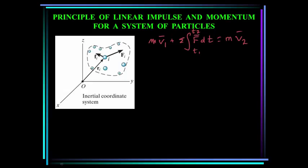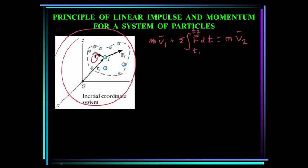Now we're going to extend this to a system of particles. The little f sub i's are internal forces acting between the particles as they collide or interact with each other. The internal forces between particles always occur in pairs with equal magnitude and opposite directions. Thus the internal impulses all sum to zero. The big F sub i represents an external force.